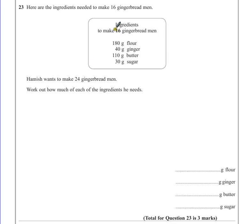Now, the thing that we should notice is that 16 and 24 are both in the 8 times tables. So, if we half this recipe to find out the recipe to make 8 gingerbread men, we can triple it to get 24.